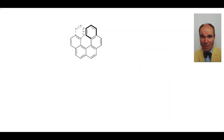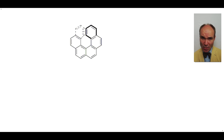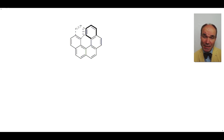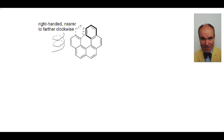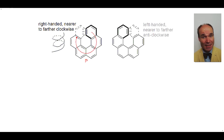The helix shape is extremely clear when it comes to helicenes. When describing the stereochemistry, we don't have to assign priorities to functional groups — simply move from the nearer part of the structure towards the farther part. If that imaginary movement is clockwise, the descriptor is P; if anti-clockwise, the descriptor is M. In this example, we have a right-handed helix — nearer to farther is clockwise, so the descriptor is P. For the enantiomer, it's a left-handed helix — nearer to farther goes anti-clockwise, so the descriptor is M.